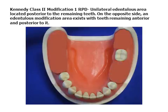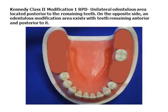This video describes a template for restoring the Kennedy Class 2 Modification 1 arch form. A unilateral unbounded edentulous space defines it as a Kennedy Class 2. The edentulous space on the opposite side is bound by teeth anteriorly and posteriorly, and is a modification space. Modification spaces are designated by the number of separate bounded edentulous spaces. If the third molars are missing and not to be replaced, they are not considered in the classification.